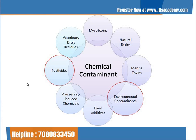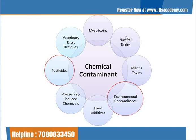The next category is chemical contaminants — different substances which may pose health risks to the consumer if present in the food system. Examples of chemical contaminants include mycotoxins, natural toxins, marine toxins, environmental contaminants, food additives, processing-induced chemicals, pesticides, and veterinary drug residues. Some of these are naturally present in the food system, like natural toxins, and some are added during processing steps.